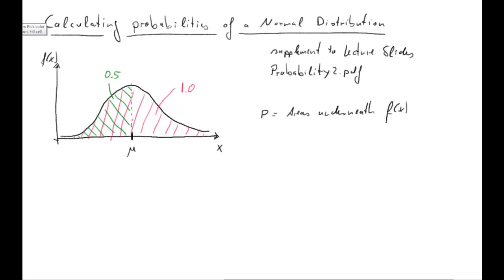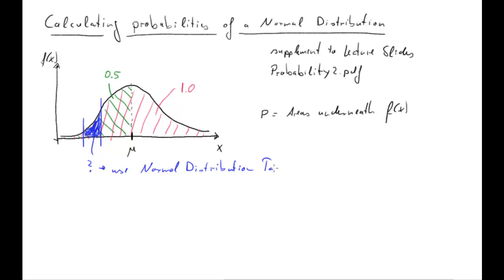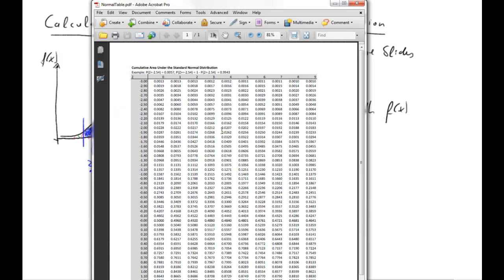So what we may now be interested in is probabilities of this type: what's the probability that x is going to be larger than this value and smaller than this value? We are now interested in this sort of area here. To find that out — that's not as easy — what we need is to use a normal distribution table. So that is this guy, and he is going to be our friend very soon. Let's have a little look at this table in a minute.